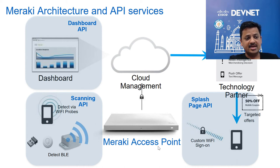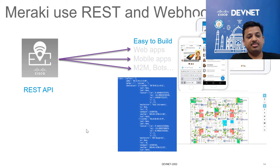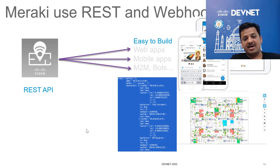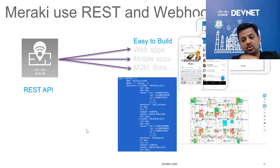Today we'll be concentrating mostly on the scanning API. One of the things that Meraki uses is REST APIs, so your application building becomes very simple and easy, and you can enable it through web apps, mobile apps, or even machine-to-machine communication. The events generated from Meraki are sent to your webhook where you can make use of that information.